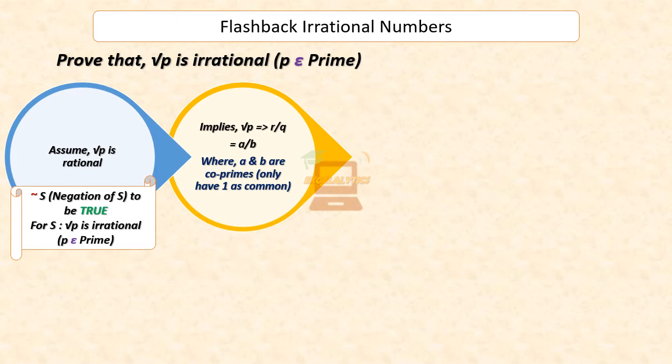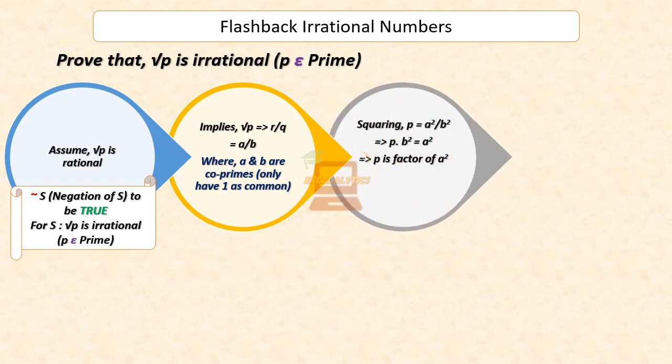If R and Q have a factor in common other than 1, R by Q gets reduced to A by B, where A and B are co-primes. Squaring both sides, we get P equals A squared by B squared. Rearranging the equation, we get P times B squared equals A squared. This implies that P is a factor of A squared, and so P divides A squared.